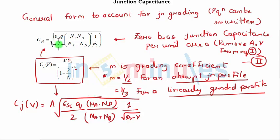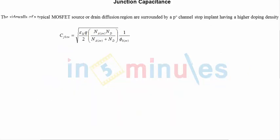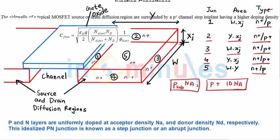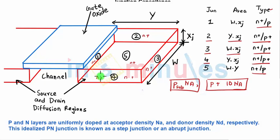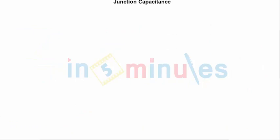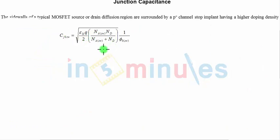We derived the zero-bias junction capacitance per unit area CJ0, and substituted it into the general expression to get CJ(V). For the sidewall junctions 2, 3, and 4 — surrounded by the P+ channel stop implant at 10×NA — the sidewall junction capacitance uses the same equation, with the only change being the acceptor doping replaced by the sidewall doping. We have covered junction capacitance superficially; stay tuned for further clips, and thank you very much.